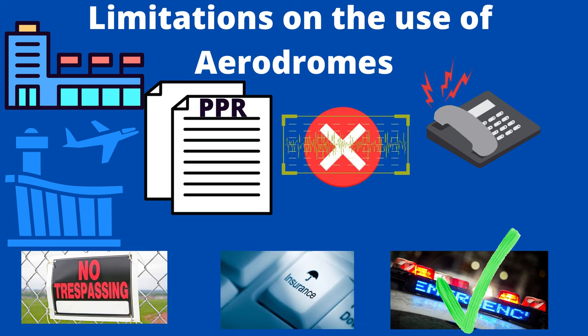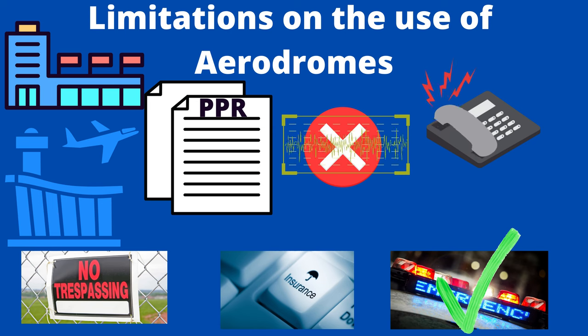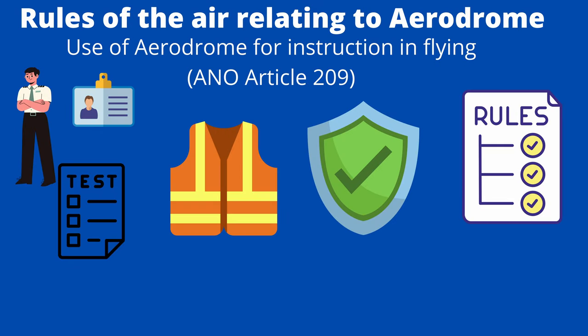Aerodromes not listed in the Aerodromes section of the Aeronautical Information Publication may be used in an emergency, or if prior permission from the owner or operator is obtained. ANO Article 209: if a flight is for the purpose of instruction in flying to enable a person to become qualified for the grant of a pilot's licence, for the inclusion of a rating, or for carrying out a flying test for any of these purposes, then before an unlicensed aerodrome or non-EASA-certified aerodrome may be used, the operator must be satisfied that the aerodrome has adequate facilities for the safe conduct of such flights, and the commander of the aircraft must not take off unless the pilot is similarly satisfied.